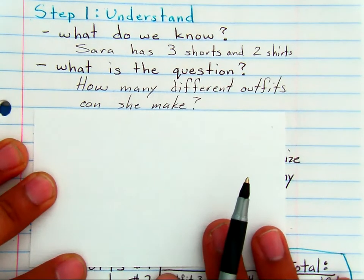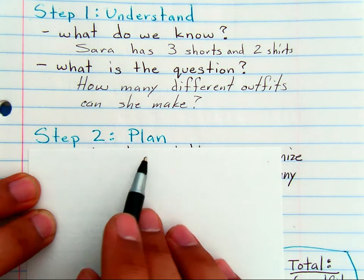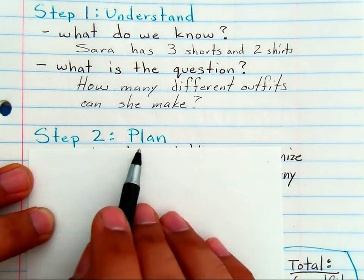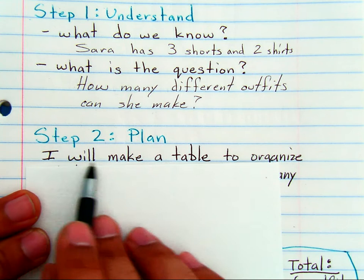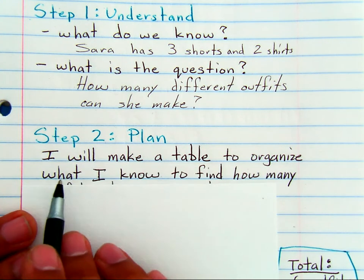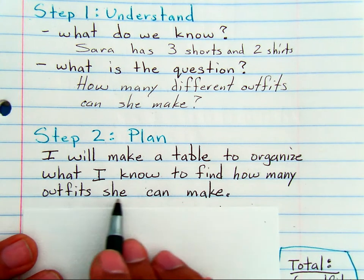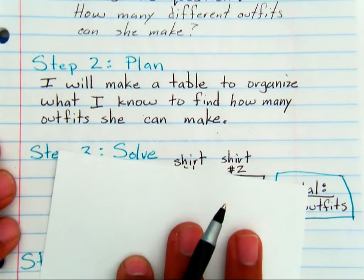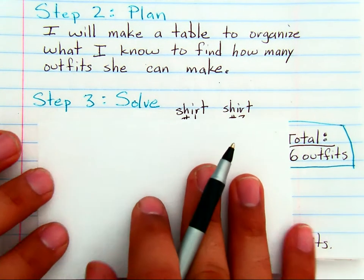Now that we understand, that's step one, we can make a plan. This is where this video is teaching something new. This plan is going to involve making a table to organize what I know to find how many outfits she can make. Now we have a plan. Let's learn how to make that table.